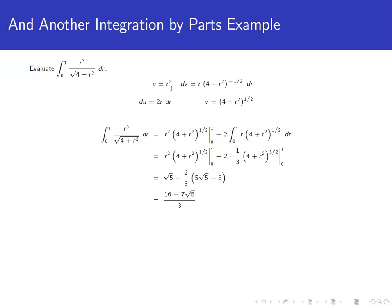Now I do your integration by parts, or excuse me, do the derivative of u and anti-derivative for dv. Your du is 2r dr. Your v turns out to just be 4 plus r squared to the 1 half.